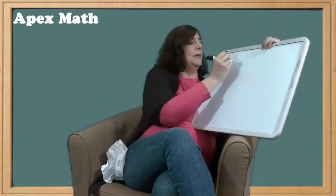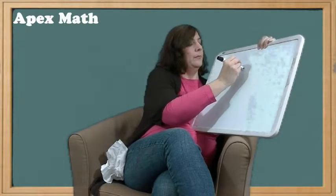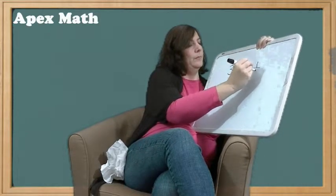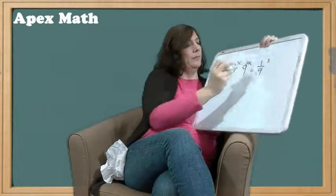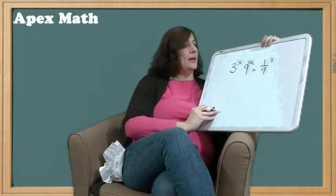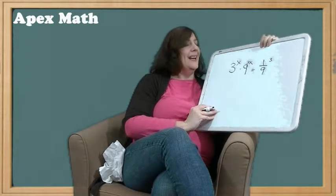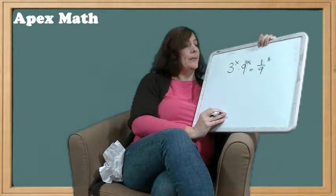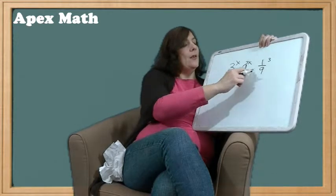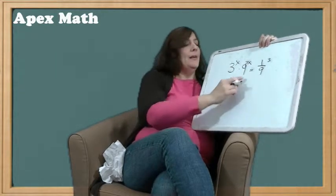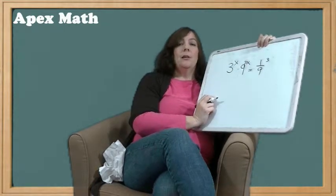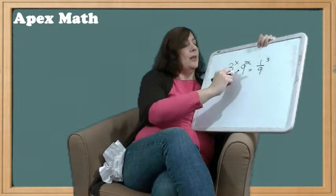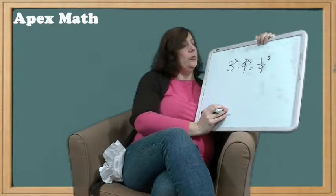Now, what if we have this type of equation: 3 to the x times 9 to the 2x equals 1 ninth to the third. Again, you can notice that our x is up in that exponential position. But what's different about this is you can see that all of these numbers have something in common here. 9 can be written as 3 to a power. So instead of using logs here, I can actually just use a change of base in order to solve this equation.